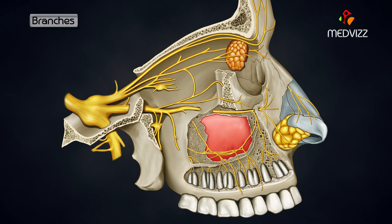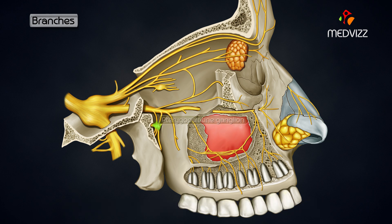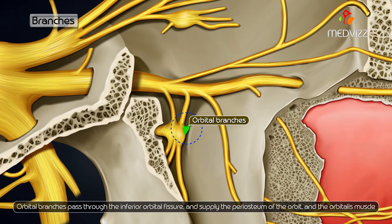Branches: The branches of the ganglion are actually branches of the maxillary nerve. They also carry parasympathetic and sympathetic fibers which pass through the ganglion. The orbital branches pass through the inferior orbital fissure and supply the periosteum of the orbit and the orbitalis muscle, which is involuntary.